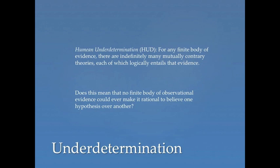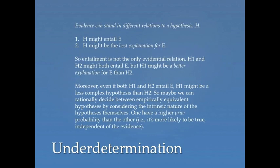This is one version of the problem of underdetermination. The version we're considering here is supposed to create a problem for the rationality of scientific practice. After all, we want the evidence to direct us, but if there are a whole bunch of incompatible theories that entail the evidence we have, how can we use that evidence to decide among them and determine which one to rationally accept?